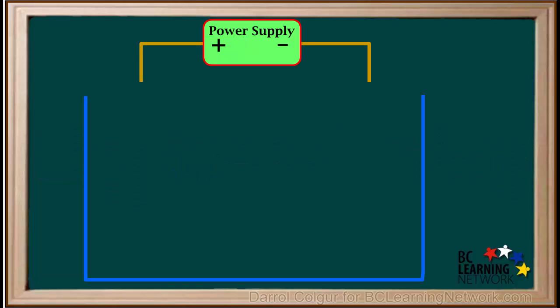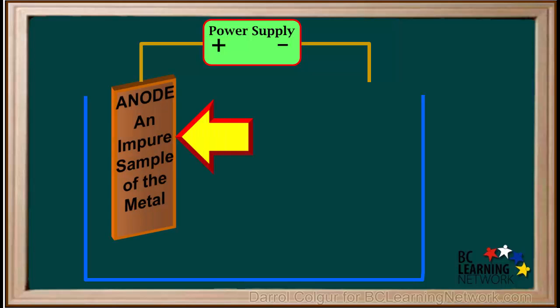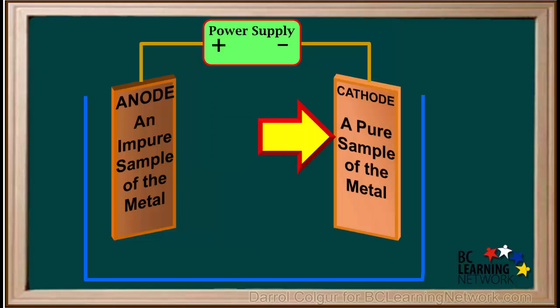The most important thing to know for electro-refining is the anode is an impure sample of the metal we want to refine. Remember, the anode is connected to the positive terminal of the power supply. And the cathode must be a pure sample of the metal we want to refine. Remember, the cathode is attached to the negative terminal.